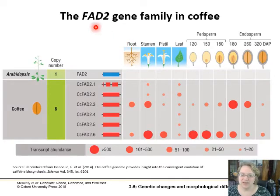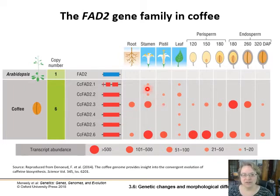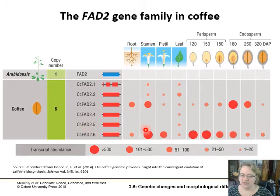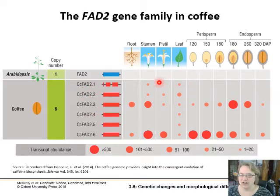Here's another example: the FAD2 gene family in coffee. In Arabidopsis there's one copy — FAD2. Coffee now has six copies of this gene, one of which is a partial copy, and they're expressed in different areas of the plant at different times during development. The sixth copy is most strongly expressed, while the other copies are only expressed in small amounts in leaves and such. This whole family is descended from one particular copy but has moved throughout the genome and gained new functionality in different parts of the plant.